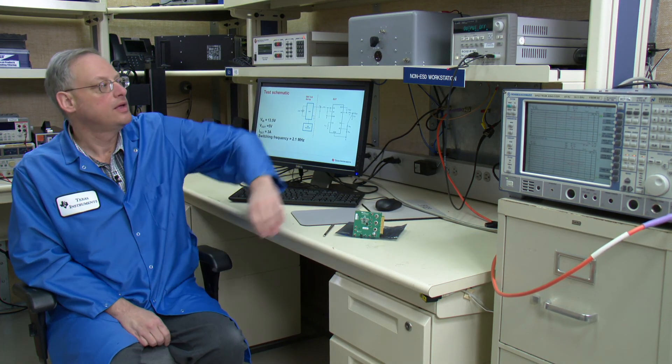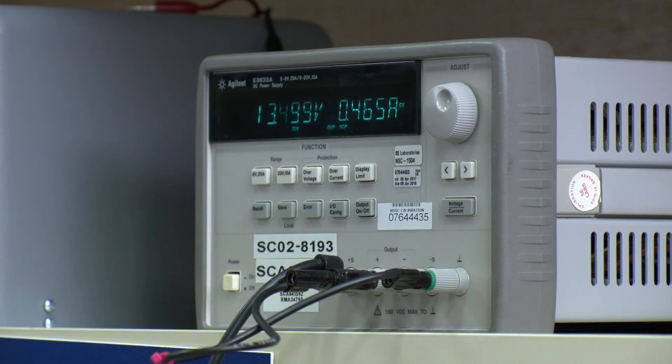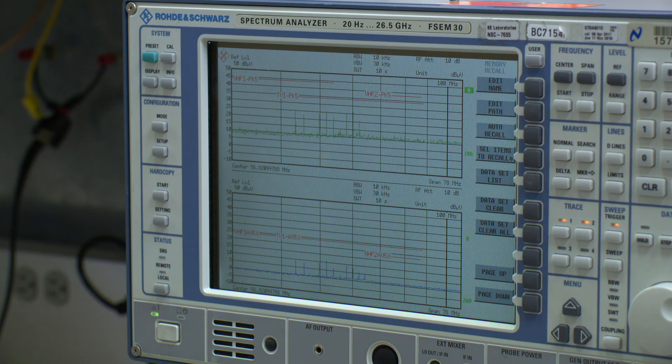Here we are back in the lab and we're ready to run the EMI scan. So I turn the power supply on, 13.5 volts, the EMI receiver will go ahead and run the scan over the proper frequency range and we can see our results.